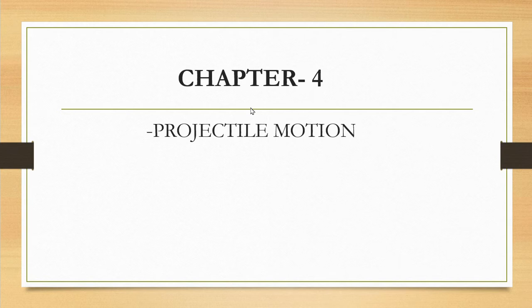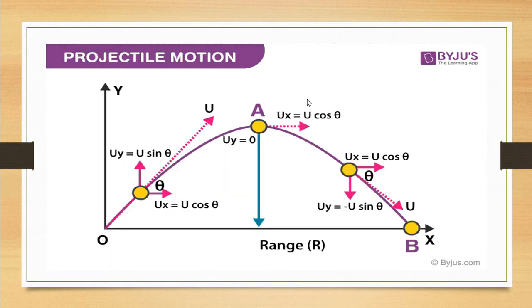This is a trajectory. Let me show you this figure. Some of you can see the body origin. I am going to make this path — it is a parabolic path, and I am going to make a projectile motion.